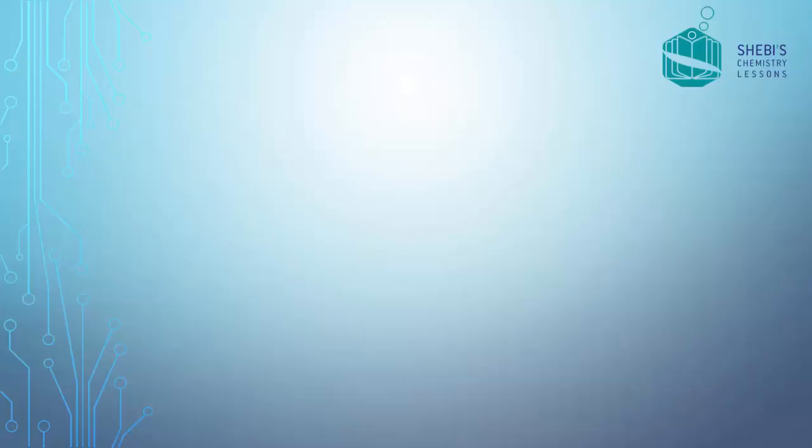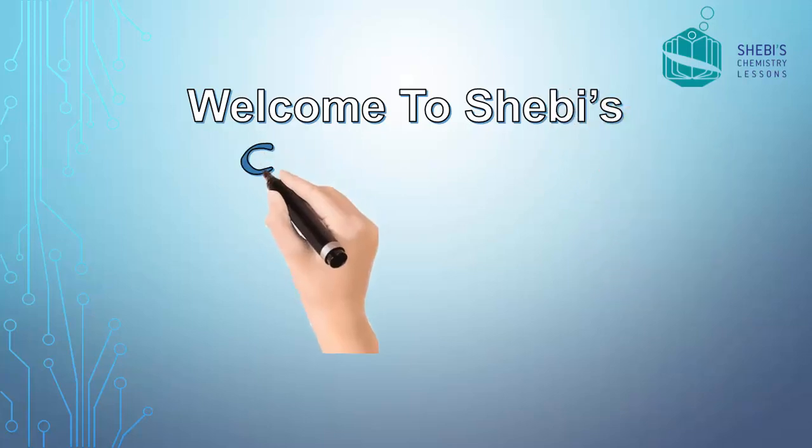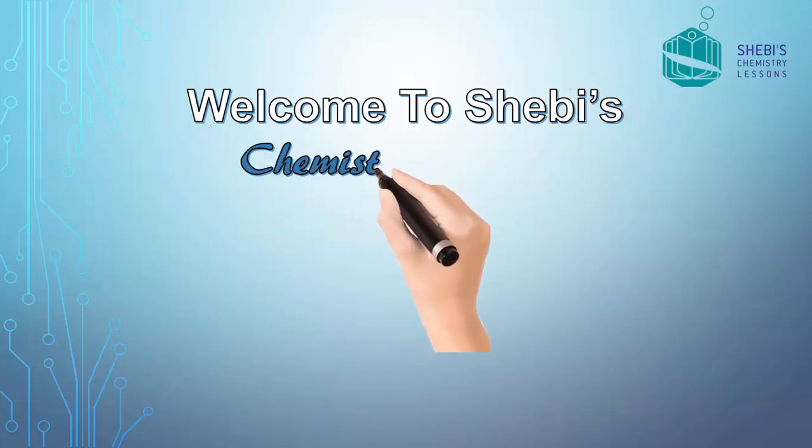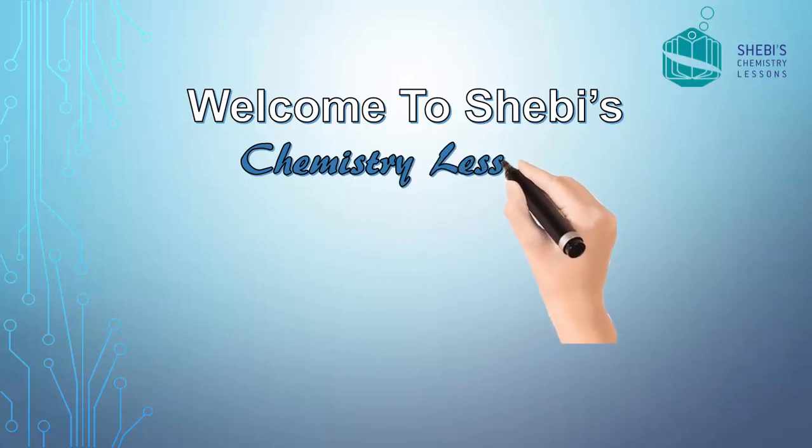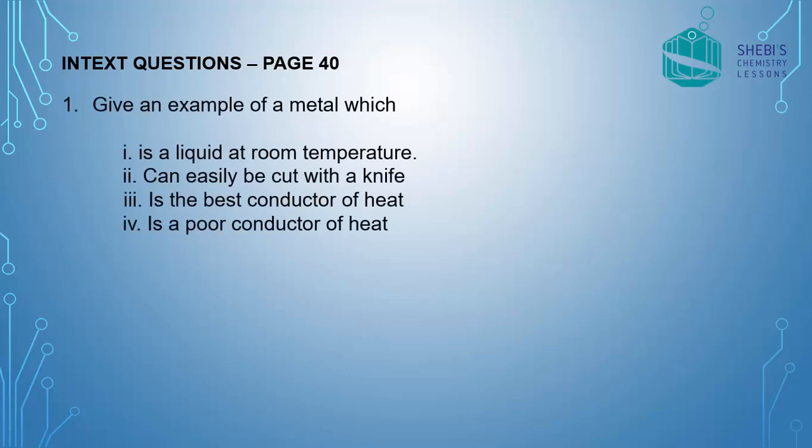Come on, let's move to the questions. So here we are going to discuss in-text questions from page number 40. See the questions? Give an example of a metal which is liquid at room temperature, can easily be cut with a knife, is the best conductor of heat and is a poor conductor of heat.